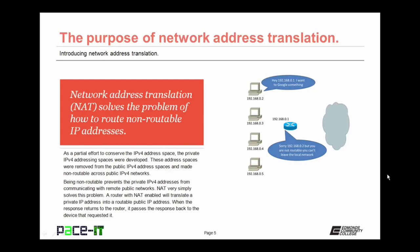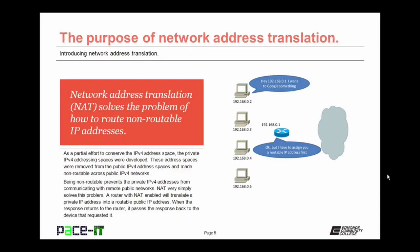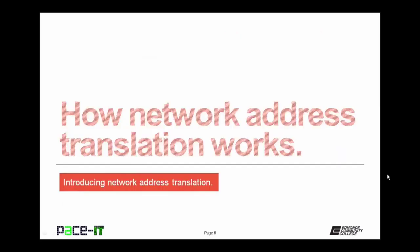Being non-routable prevents that private IPv4 address from communicating with remote public networks. NAT very simply solves this problem. A router with NAT enabled will translate a private IP address into a routable public IP address. When the response returns to the router, it passes the response back to the device that requested it. So now that we've covered the purpose, let's talk about how network address translation works.